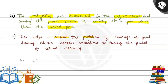Fifth point: this helps to resolve the problem of shortage of food during adverse weather conditions and during the period of natural calamity. जब भी natural calamity या adverse weather conditions होती है, जैसे कम rainfall जिसकी वजह से food production impact हो रहा है, ऐसे situations में यह stored food, food insecurity की problem को resolve करता है.